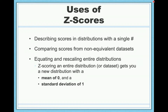Finally, you can use z-scores to equate and rescale entire distributions of data. If you have a large column of numbers, you can z-score every single person in that column, and what you'll end up with is a standardized data set comprised only of z-scores. That data set will naturally have a mean of 0 and a standard deviation of 1. You can do that for many different variables and then compare scores from variables that were originally very different from one another — so the applications are nearly endless.